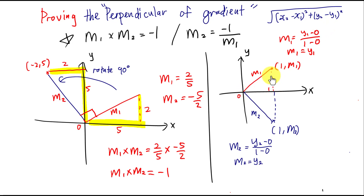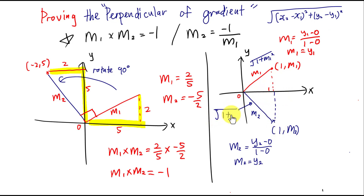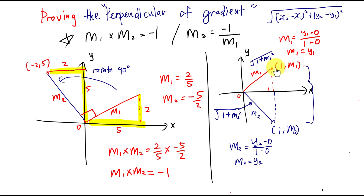I know one side is 1 and the other is m1, so using the Pythagorean theorem, the length of the first line is √(1 + m1²). Similarly, the length of the second line is √(1 + m2²), since the sides are 1 and m2. The distance between the two endpoints — which is the change in y — is m1 minus m2 (taking the higher value minus the smaller value).